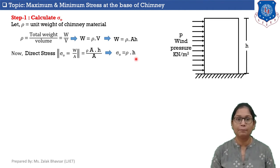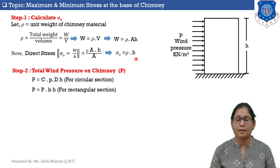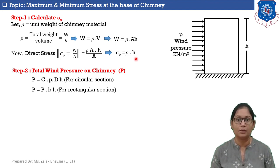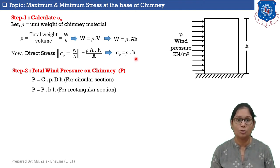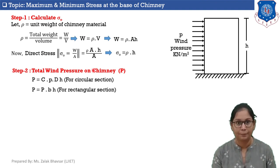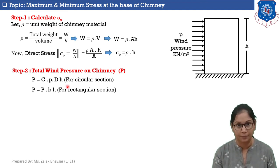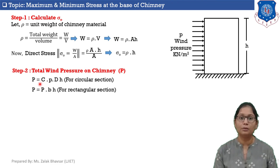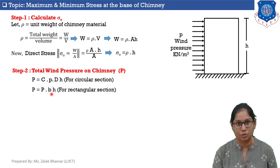Step number two: calculate total wind pressure. Just as a dam is subjected to water pressure and a retaining wall to soil pressure, a chimney is subjected to wind pressure. For a circular chimney section, total wind pressure P equals c times small p times d times h, where c is the coefficient of wind resistance, small p is uniform wind pressure, d is the diameter, and h is the height. For a rectangular chimney section, total P equals p times b times h.